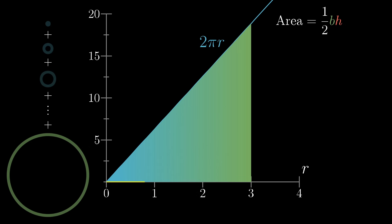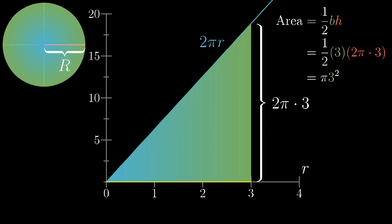A triangle with a base of 3 and a height that's 2 pi times 3. So its area, 1 half base times height, works out to be exactly pi times 3 squared. Or if the radius of our original circle was some other value, capital R, that area comes out to be pi times r squared. And that's the formula for the area of a circle.